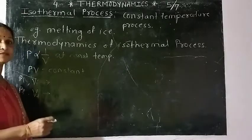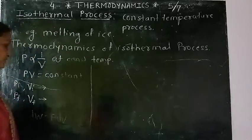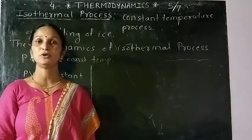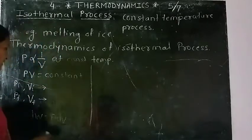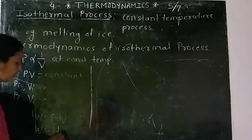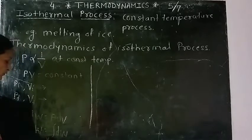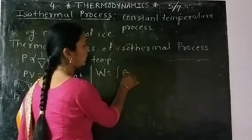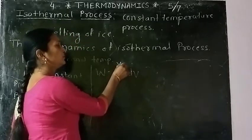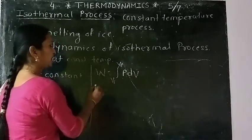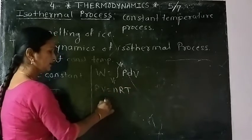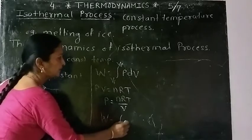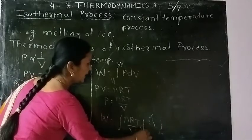We will consider the change in volume taking place from V_I to V_F. For an infinitesimal change, the work done dW is equal to P·dV. So the total work done as volume changes from V_I to V_F is W = ∫P dV. We know that PV = NRT, so P = NRT/V. Substituting, W = ∫(NRT/V) dV from V_I to V_F.